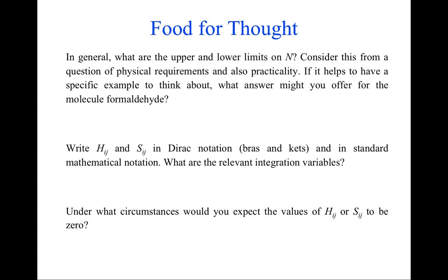To get familiar with the notation, try jotting down for yourself: How do you write a generic resonance integral or overlap integral in Dirac notation—that involves bras and kets—and in standard mathematical notation? Make sure you understand what are the integration variables—what are we actually integrating over, what's the differential variable in the integral?